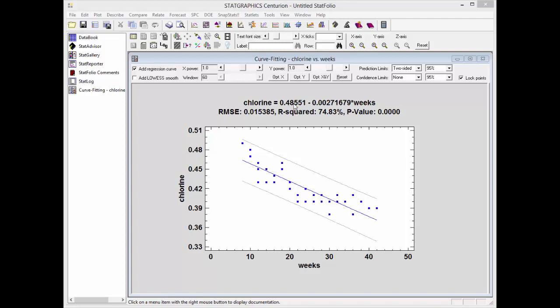You can see the equation of the line at the top of the graph. You can also see several interesting statistics. You see the root mean squared error, which measures the standard deviation of the residuals. That's the deviation around the line.